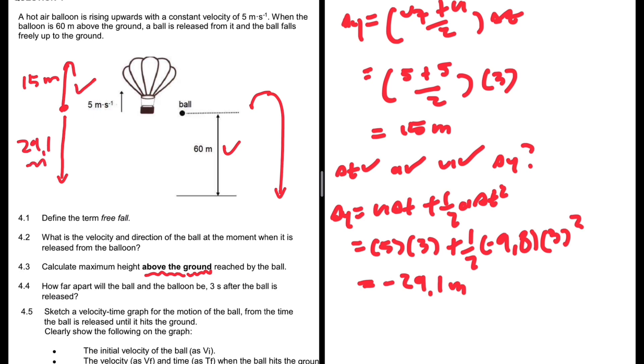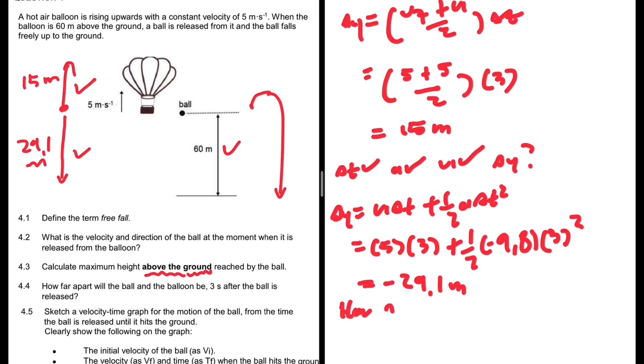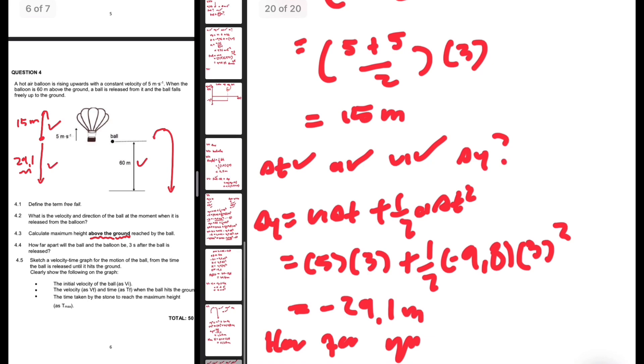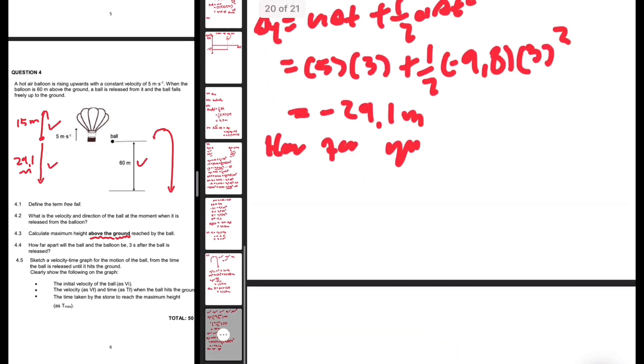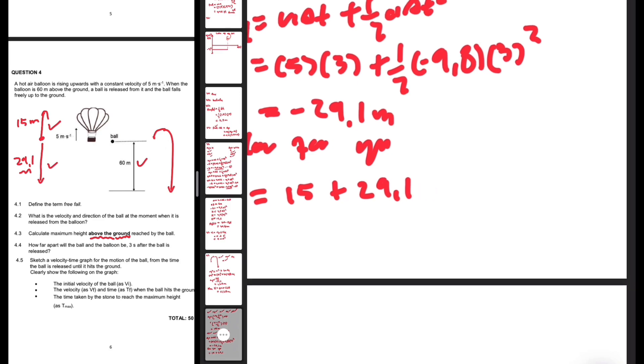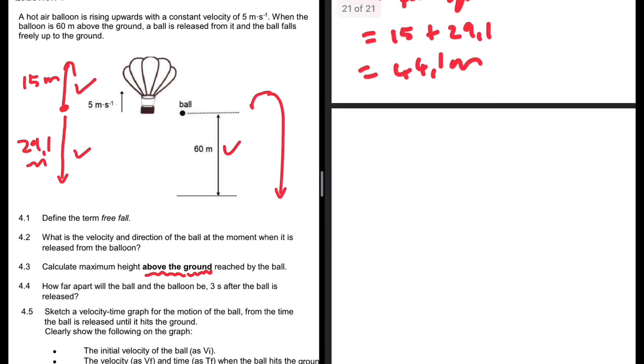We need to add these two numbers to find out how far apart they are. Let me insert a blank page. How far apart: 15 plus 29.1 meters equals 44.1 meters. There we go, that's 4.4.